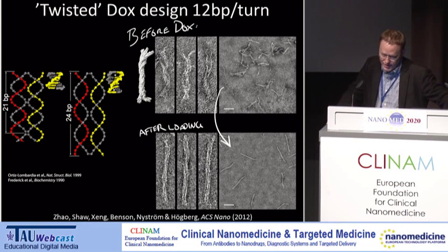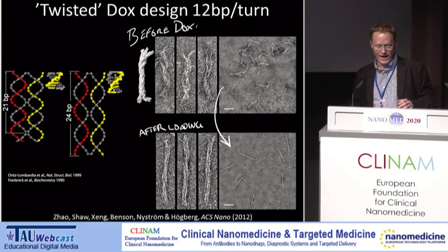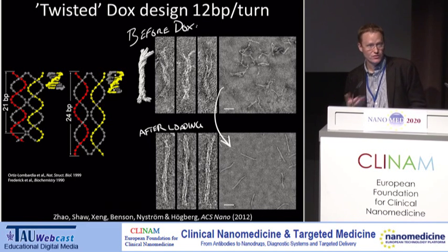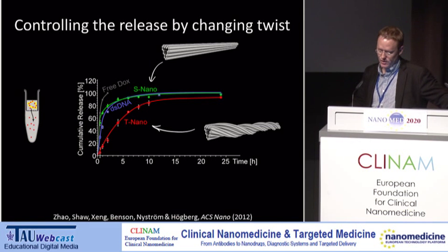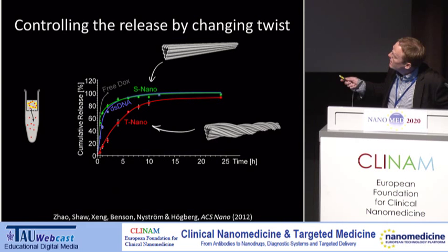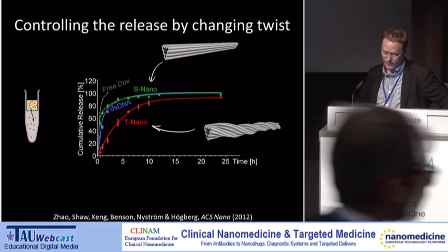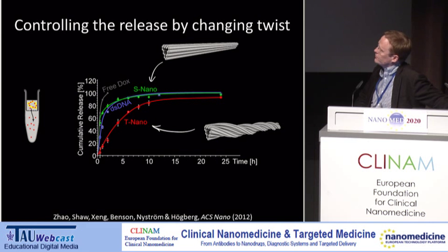We hoped that because our twisted DNA origami uses a 12 base pairs per turn design paradigm, it would bind doxorubicin harder, with higher affinity, and possibly load more drug. Indeed, that turned out to be the case. Using a common assay to evaluate in vitro release kinetics, normal straight DNA origami and double-stranded plasmid DNA showed very similar, quite fast release kinetics. But our twisted designs — with 12 base pairs per turn — showed slower release, with more than 50% of the doxorubicin still bound after several hours.